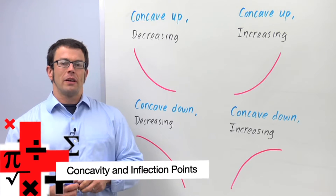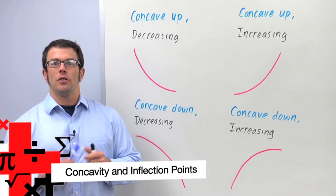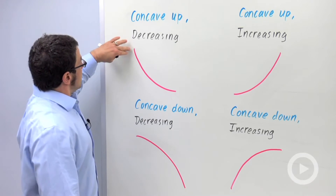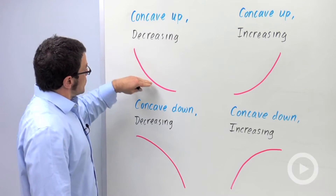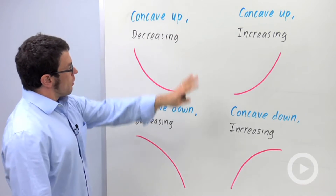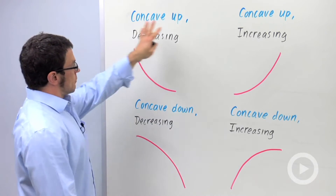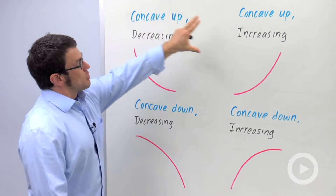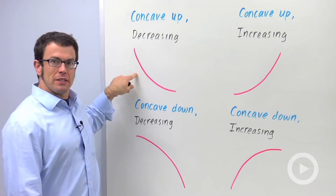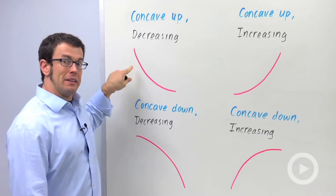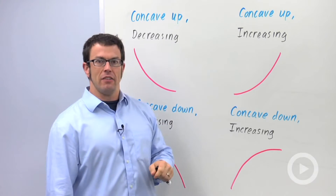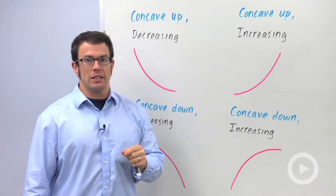I want to talk about a new concept called concavity. Concavity describes the curvature of the graph of a function. I have four kinds of graphs here. The first two are both concave up — this is an example of a graph that's concave up and decreasing, and this is an example of a graph that's concave up and increasing.